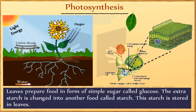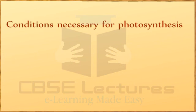This glucose is sent to different parts of the plant. The extra glucose is changed into another food called starch. This starch is stored in leaves.